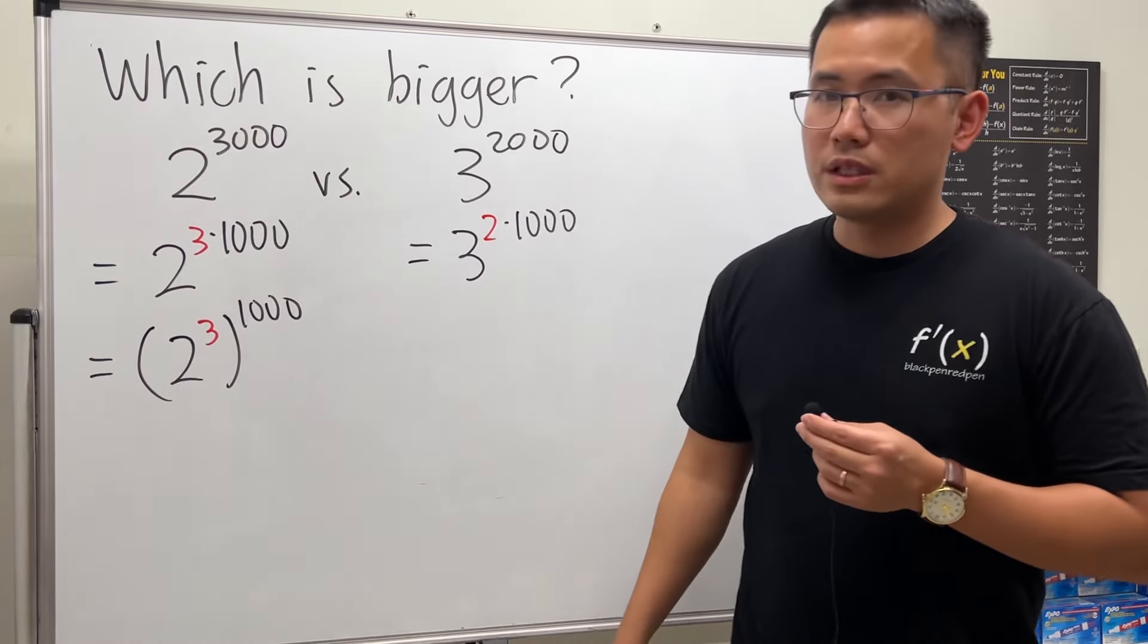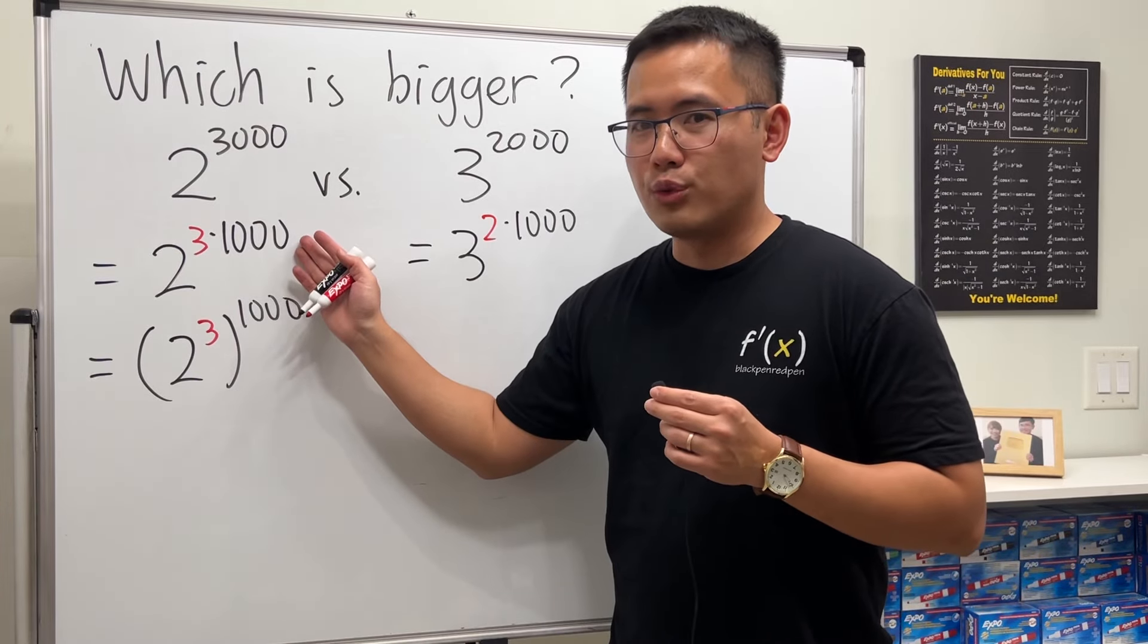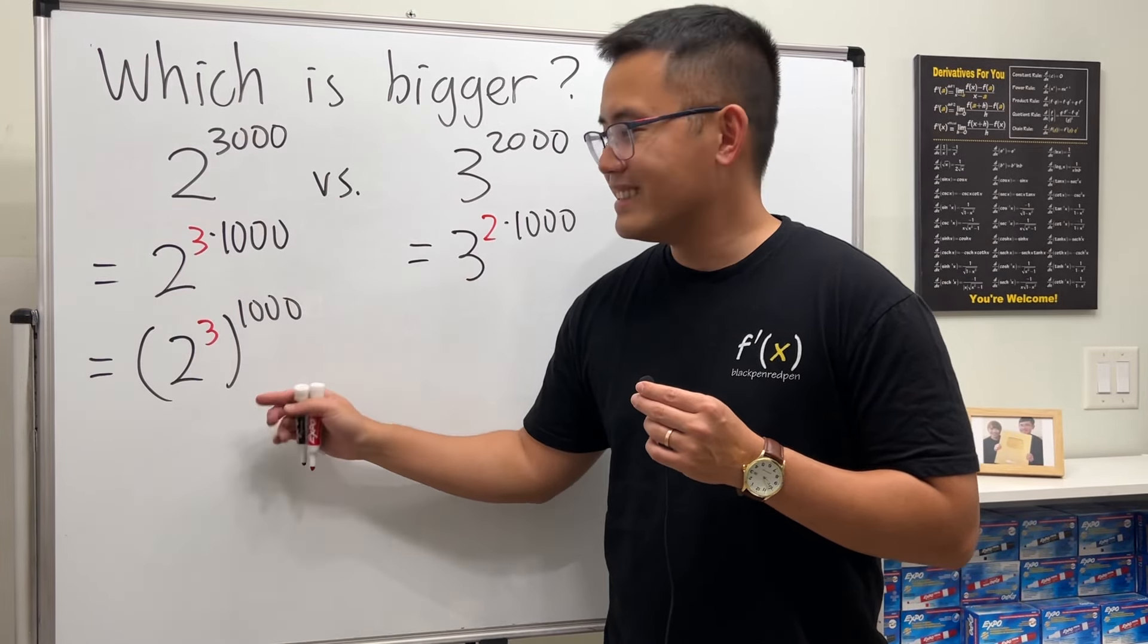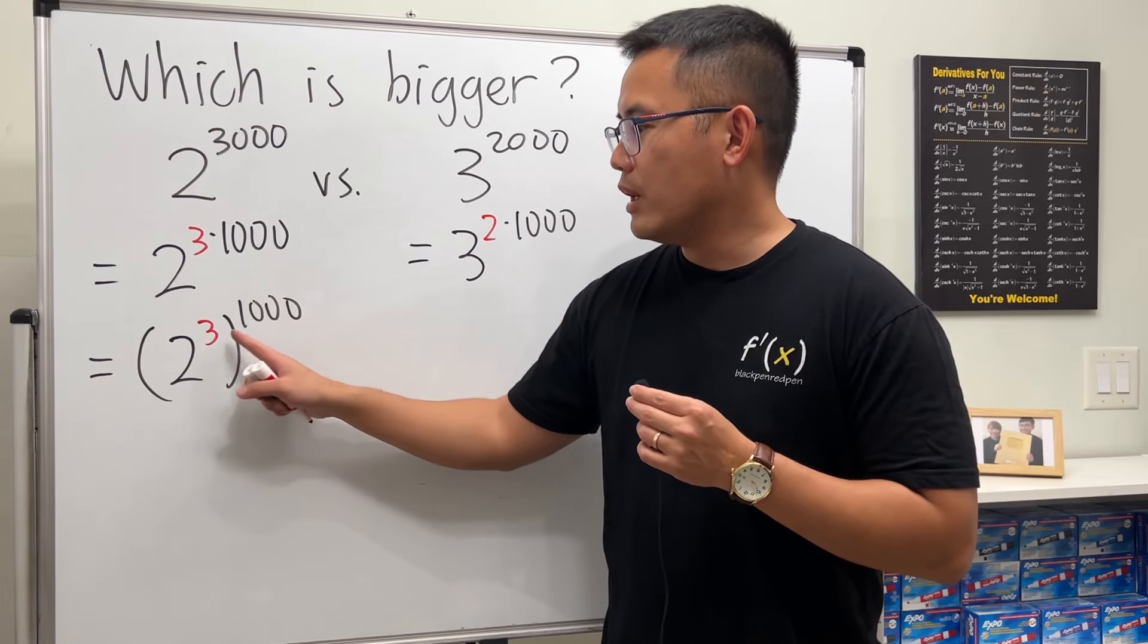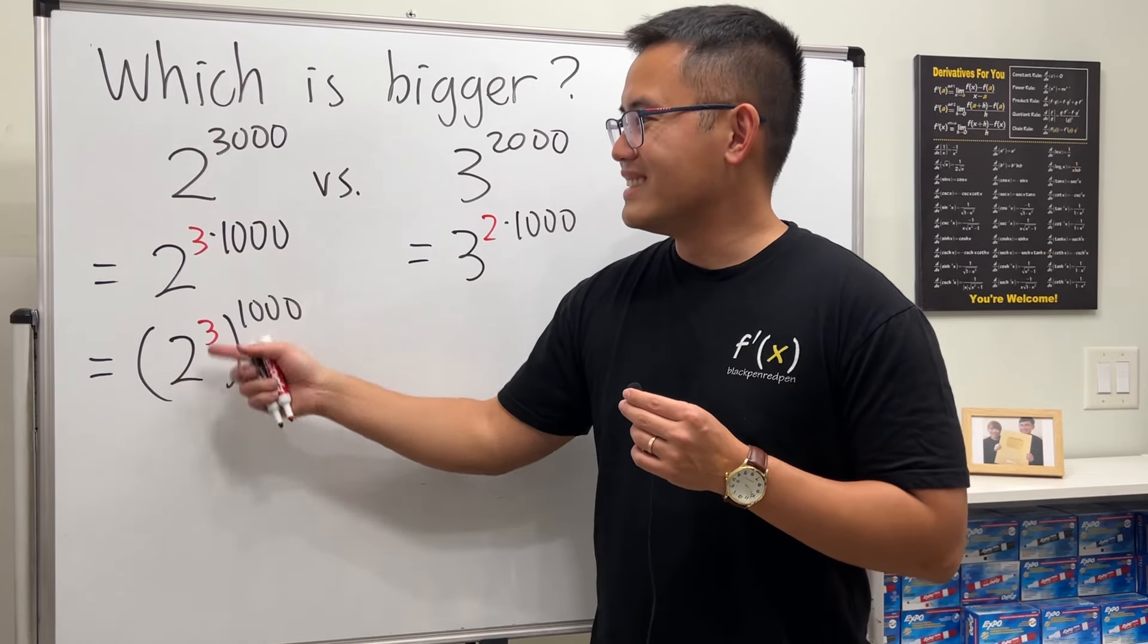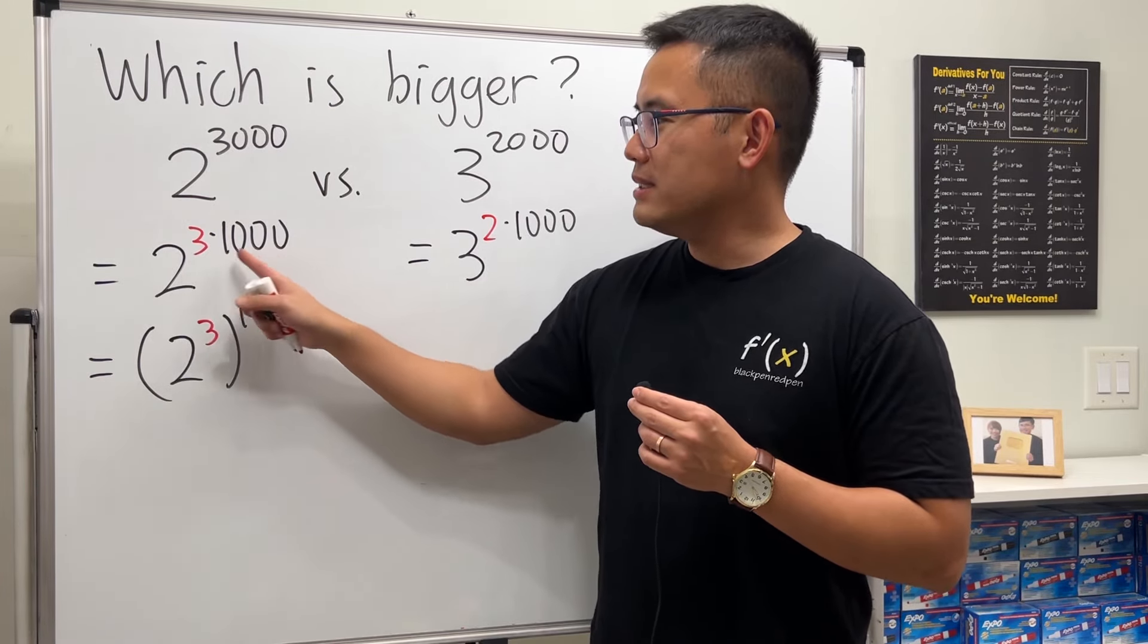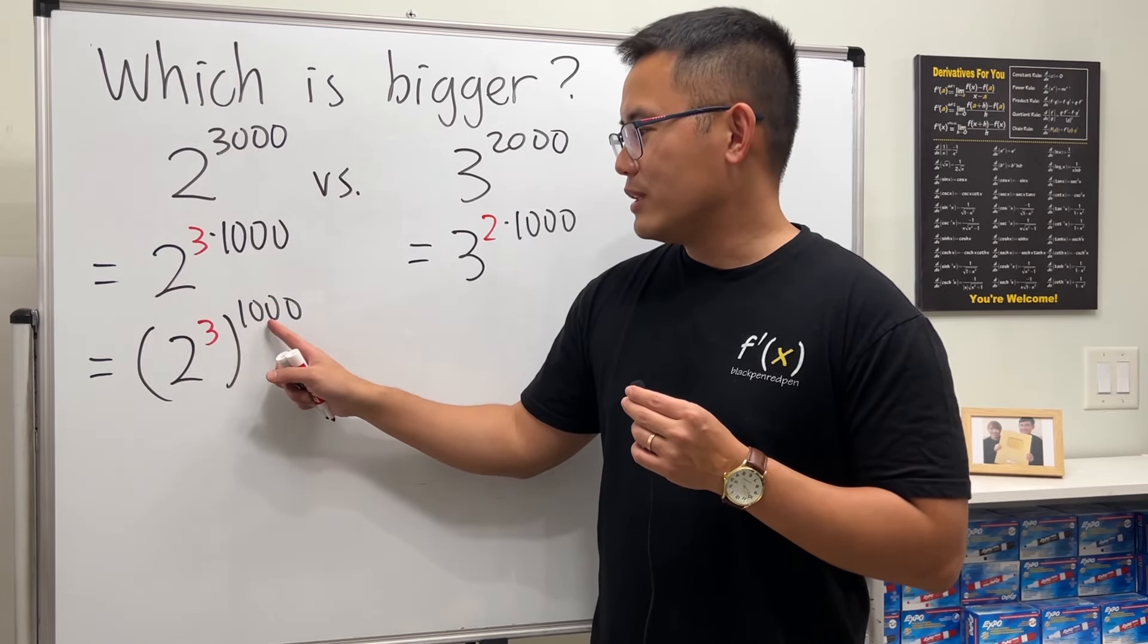Can we do that? Yes, because that's pretty much the rule of exponents backwards. Usually when we have 2 to the 3rd power and then to the 1000th power, we multiply the powers and we get that. But right now we're just doing it backwards—when we multiply the exponents, we can put the exponent to the base first and then raise to the exponent.